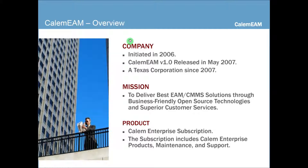Just a quick overview of who we are. Calum EAM was conceived in 2006, version 1.0 was released in 2007, and we have been a Texas corporation since 2007. Our mission is to deliver the best EAM CMMS solution through business-friendly open source technologies and superior customer services. Our product is Calum Enterprise subscription, including the enterprise products, maintenance, and technical support.